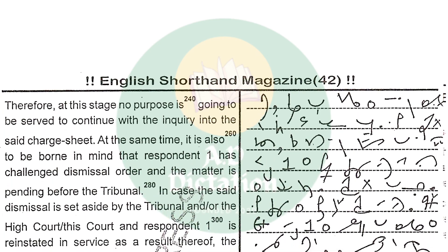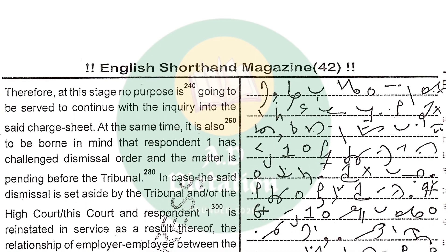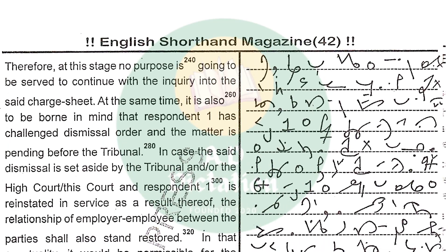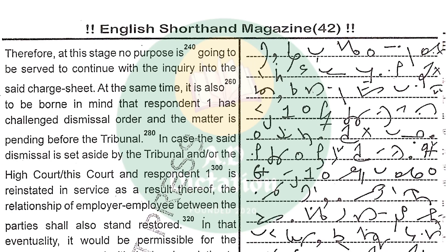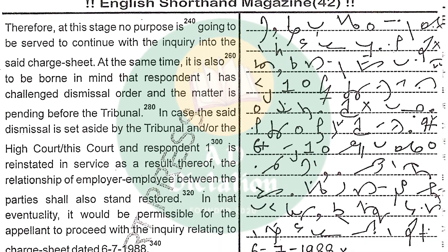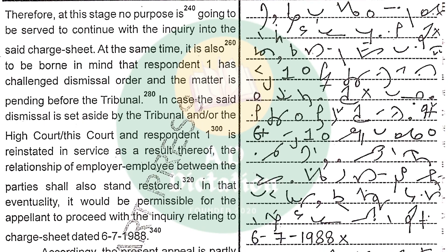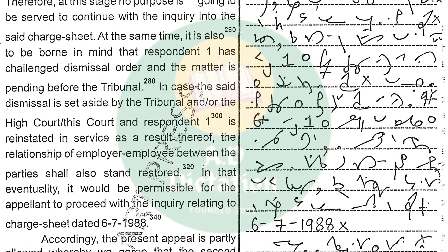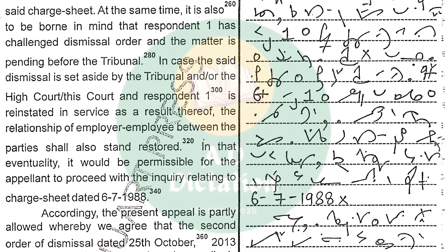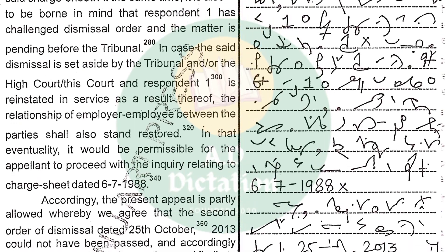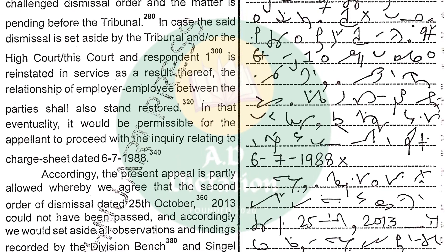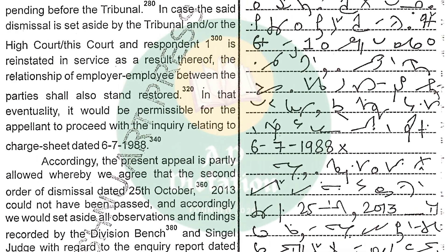At the same time, it is also to be borne in mind that respondent 1 has challenged the dismissal order and the matter is pending before the tribunal. In case the said dismissal is set aside by the tribunal and/or the High Court/this court and respondent 1 is reinstated in service, as a result thereof, the relationship of employer and employee between the parties shall also stand restored. In that eventuality, it would be permissible for the appellant to proceed with the inquiry relating to chart sheet dated 6-7-1988.